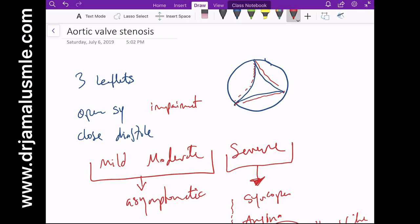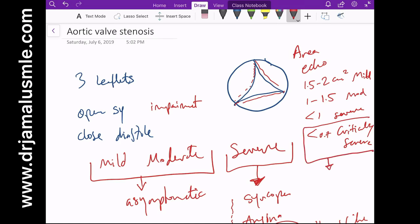To determine if the valve is stenotic or not, we have to calculate its area by using echocardiography. If it's between 1.5 to 2 centimeter squared, this is what we call mild. 1 to 1.5 is moderate, and less than 1 we call it severe. If it's less than 0.7, this is what we call critically severe. Those patients who have less than 0.7 centimeters squared of area are at a higher risk of sudden cardiac death, and even if they're asymptomatic, you must send them to replace their valve.